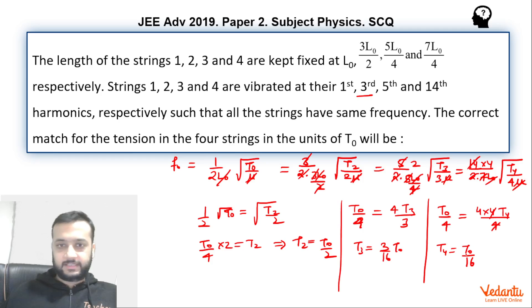Let us see the options. T2 is T0 by 2, T3 is 3 by 16 T0, and T4 is 1 by 16 T0.